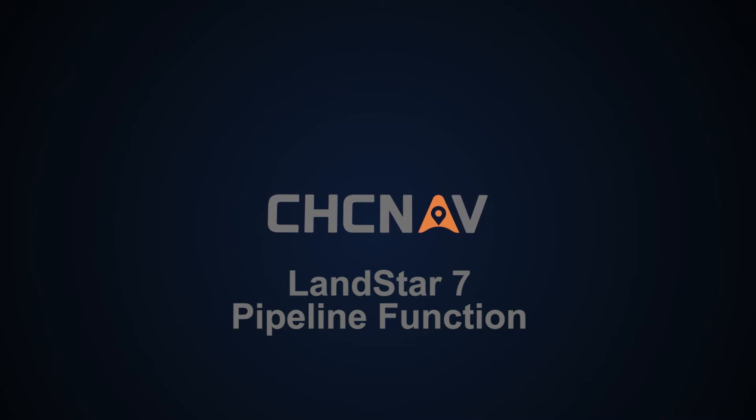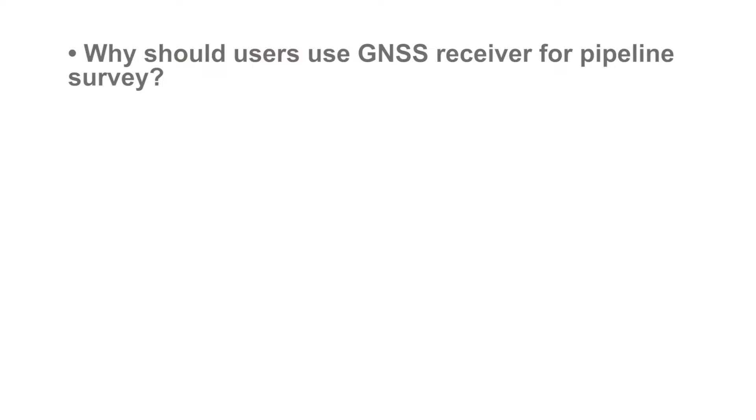Landstar 7 — Pipeline function. Why should users use a GNSS receiver for a pipeline survey?